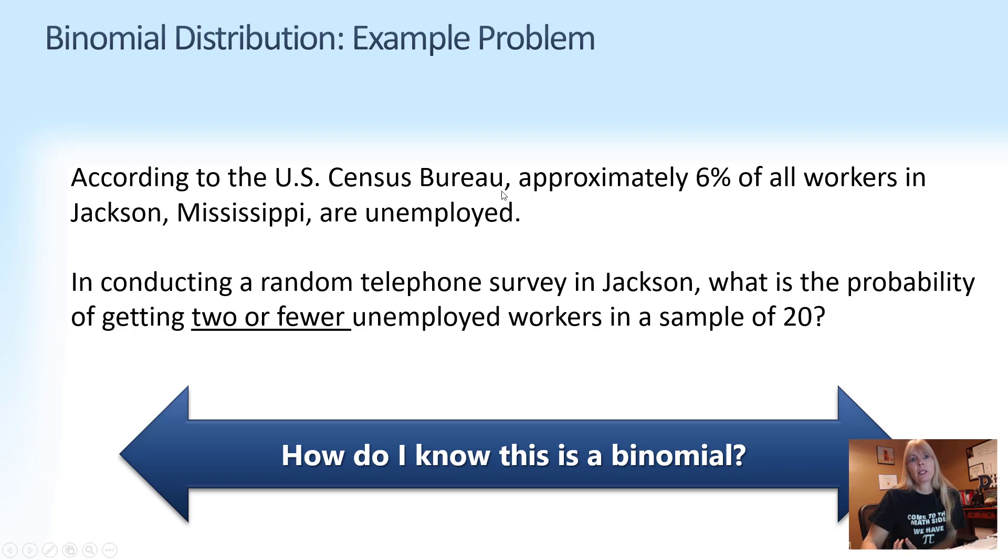So it says, according to the U.S. Census Bureau, approximately 6% of all workers in Jackson, Mississippi, are unemployed. In conducting a random telephone survey in Jackson, what is the probability of getting two or fewer unemployed workers? Now, when you take a test, you have to figure out, how do I even know which formula to use? How do I know this is binomial?